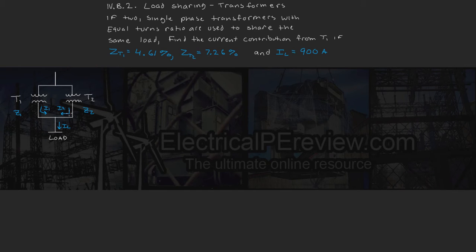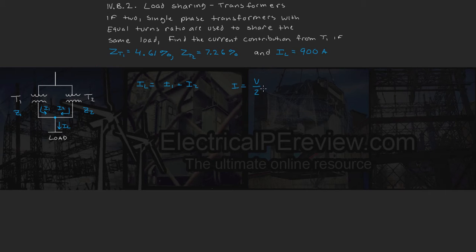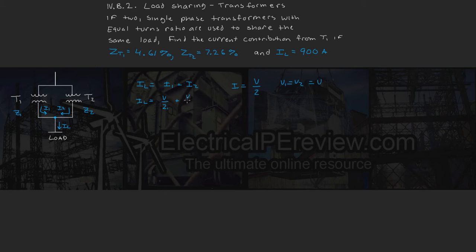Using nodal analysis, we know that for this node on the circuit, IL has to equal the sum of I1 plus I2. Going back to Ohm's law, current I equals voltage over impedance. Since these transformers have an equal turns ratio, we know that V1 equals V2, which equals V. We substitute that into our equation.